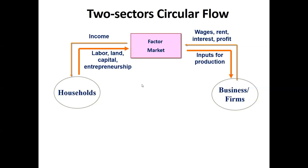Simultaneously, against labor, what are households receiving? They are receiving wages. For land, they are receiving rent. For capital, they are receiving interest. And for entrepreneurship, they are earning profits. So inputs for production — they are giving in terms of the factor market, and against this they are getting all these returns.